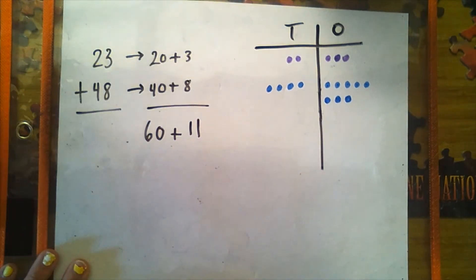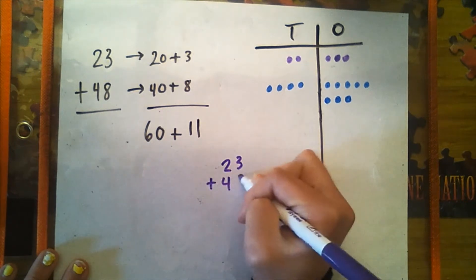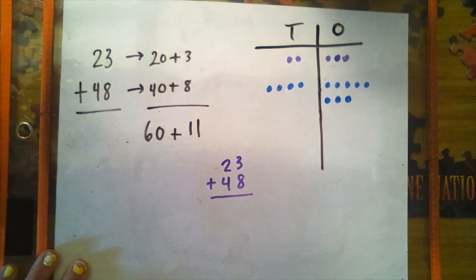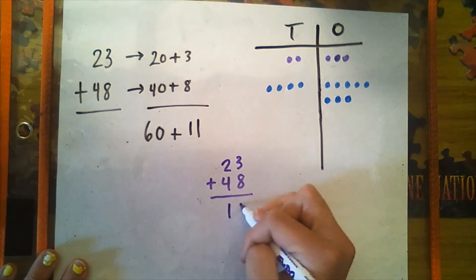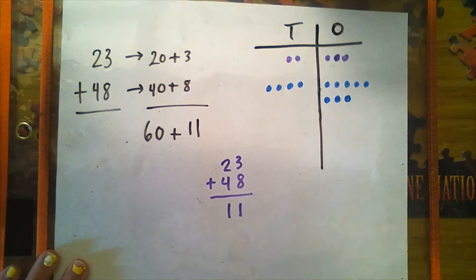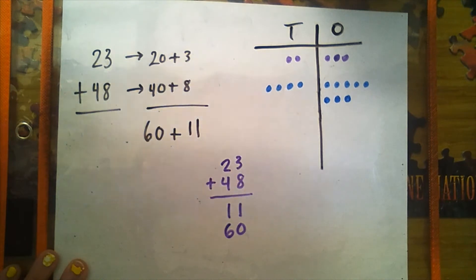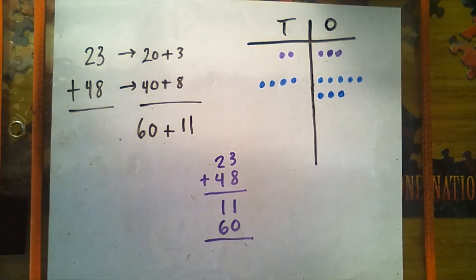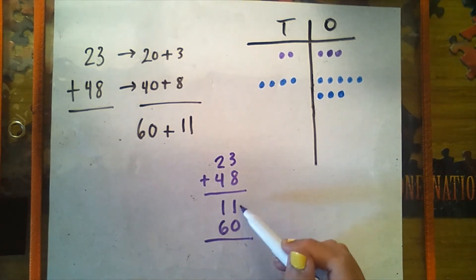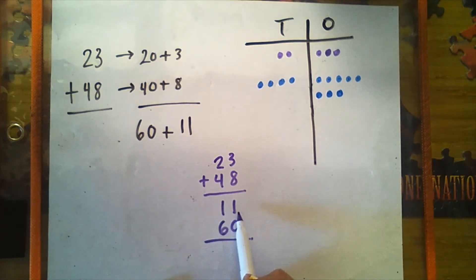Let's record these totals below the line while we add our numbers vertically. So our original number sentence is 23 plus 48. Three ones plus eight ones is 11 ones, or 110 and 11. Now let's add the 10s. Two 10s and four 10s is six 10s, which is the same thing as 60. Let's add to see what these two totals equal. Talk to a friend or family member about the sum of 60 and 11, and then we will talk about it together as a team. Welcome back, my friends. So 60 plus 10 plus 1 is 71.